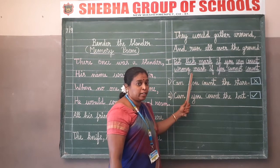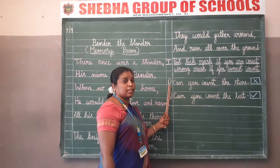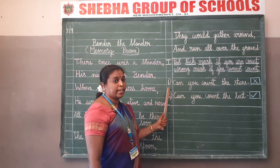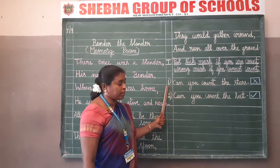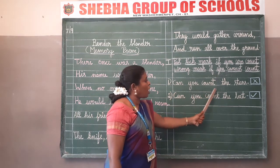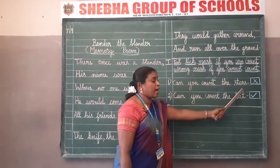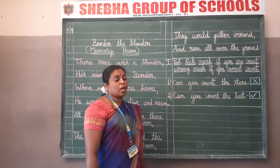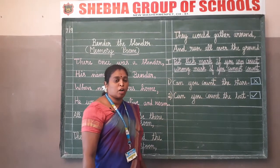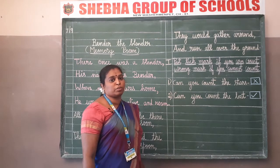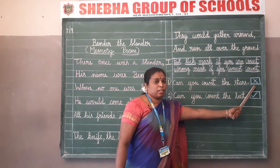After writing the heading, leave the next line and start writing from the next line. Start writing the serial number inside the margin. Number 1: 'Can you count the stars?' What is the meaning? Can you count the stars in the sky? There will be thousands and millions of stars in the sky - can you count them? No, we can't count the stars in the sky. So we have to put a wrong mark inside the box.